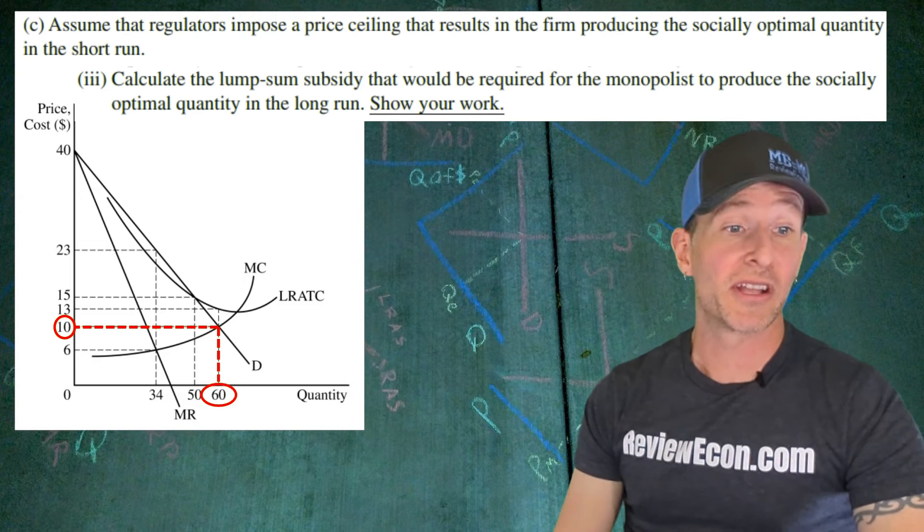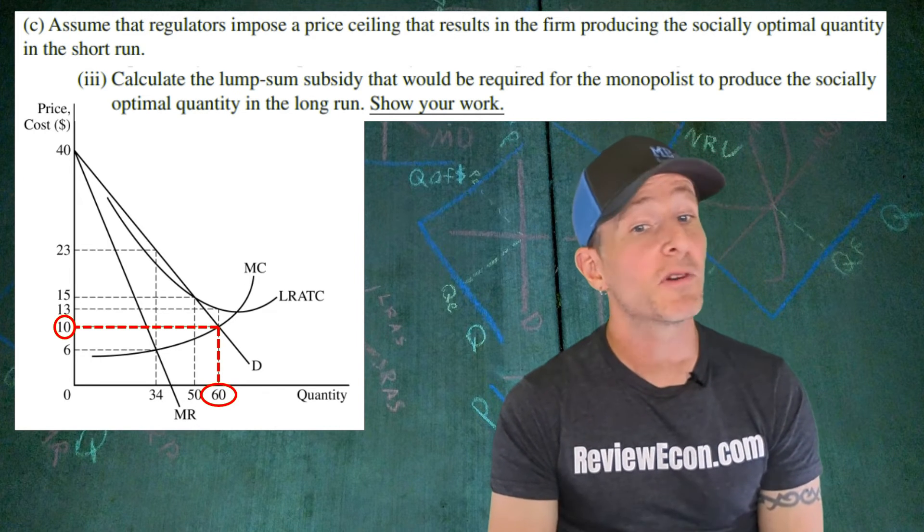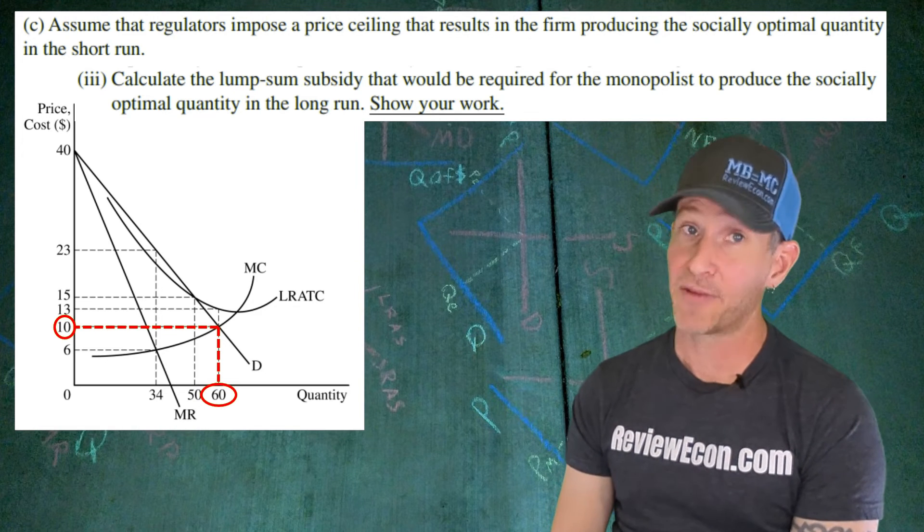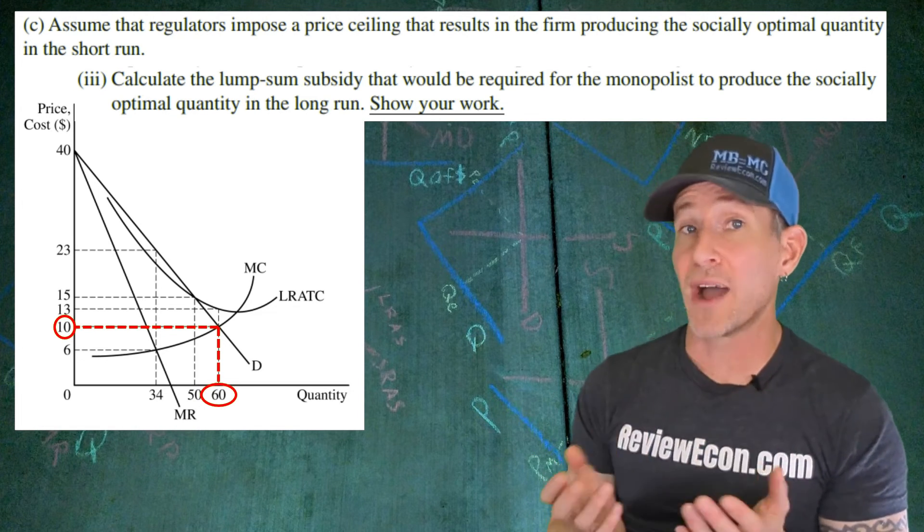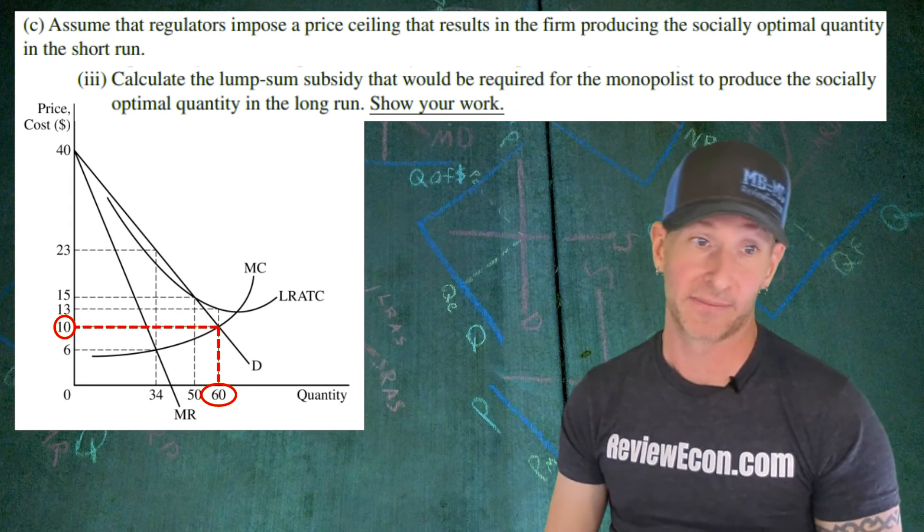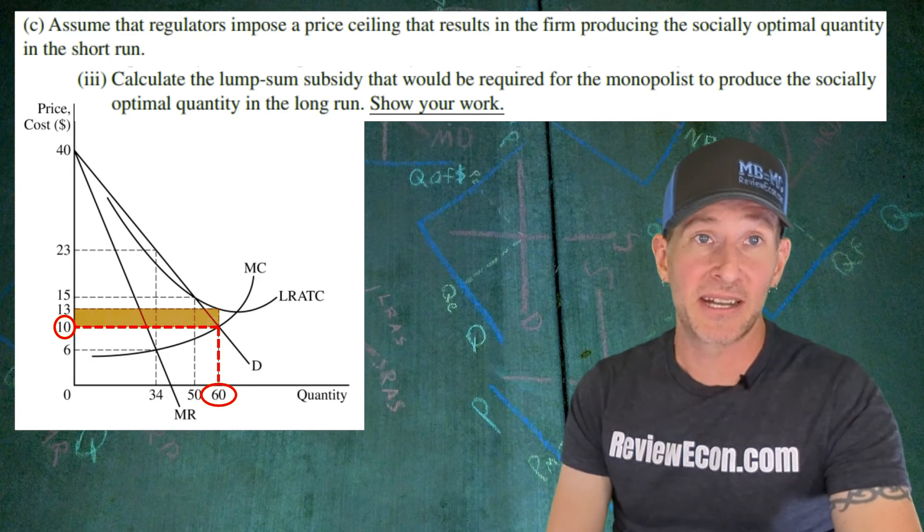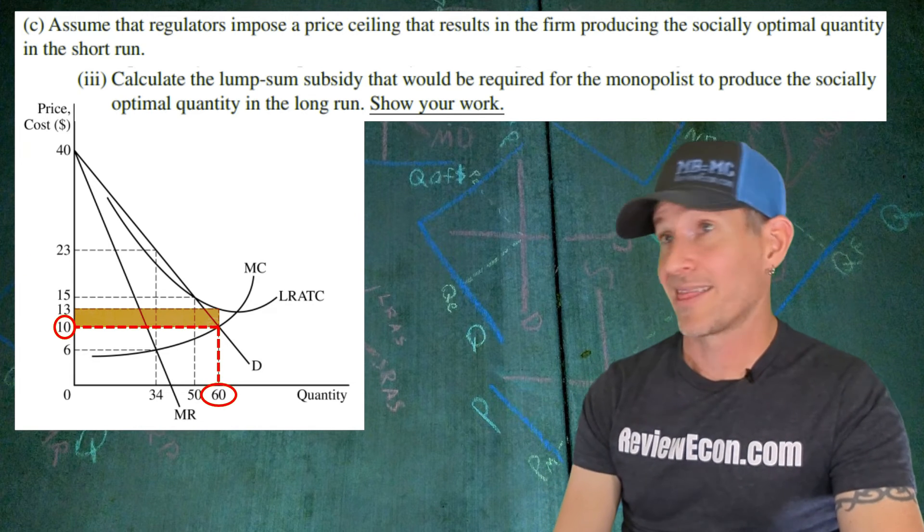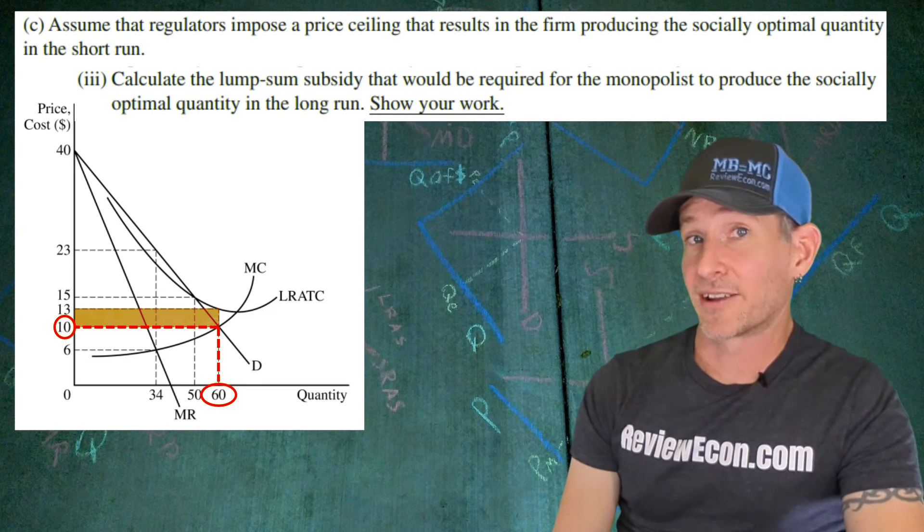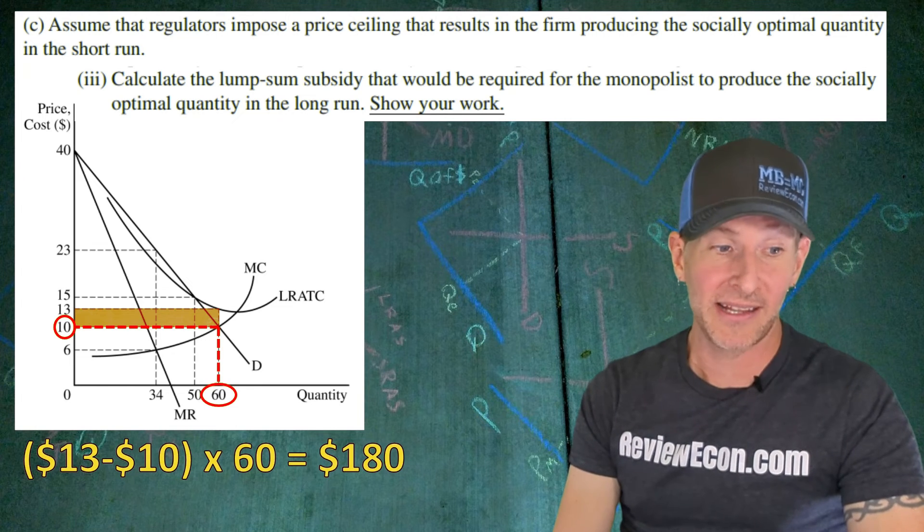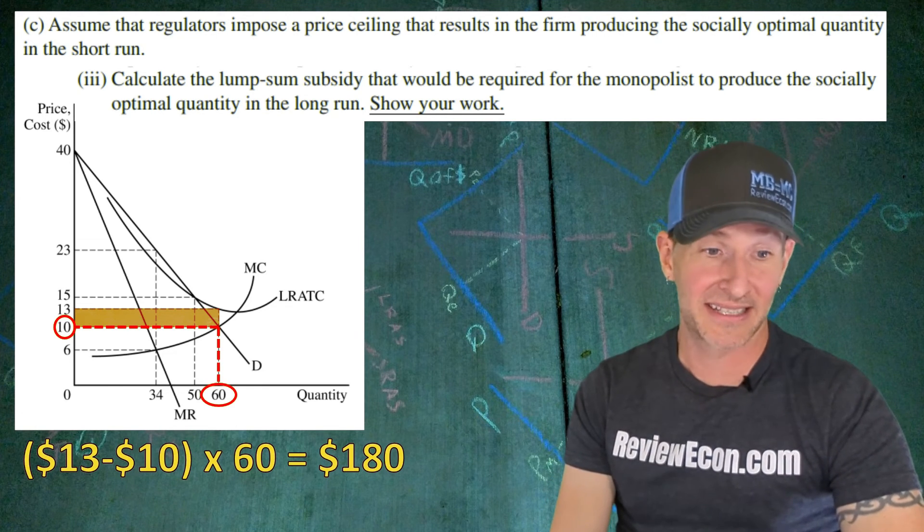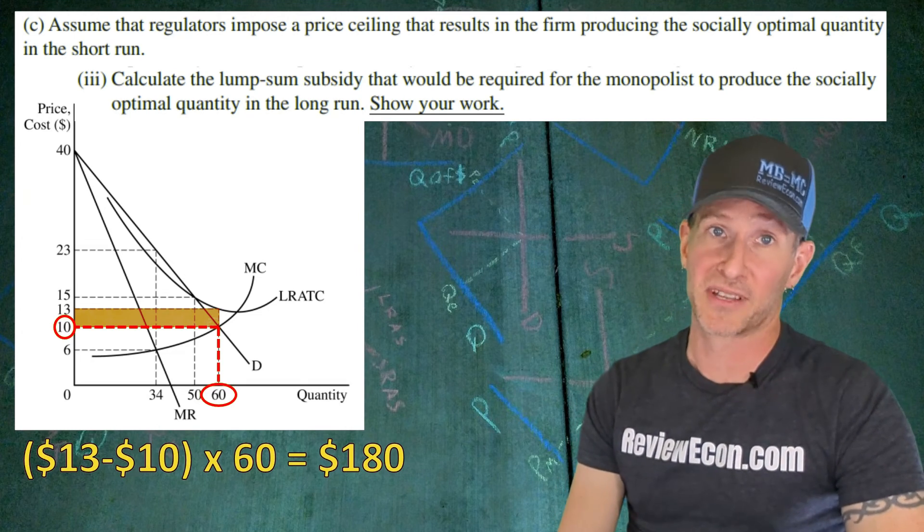For part C-III, we're going to calculate the amount of the lump sum subsidy that would be required to keep this monopolist producing the socially optimal quantity in the long run. Remember that if they don't have this lump sum, this firm will eventually shut down permanently and exit the market. But if they get a lump sum subsidy that's equal to their economic losses, that rectangle right there, then they will stay in business for the foreseeable future. So calculate the area of that rectangle. It has a height of three, that's $13 minus $10, multiply it by the 60 units, and that is $180 for that lump sum subsidy.